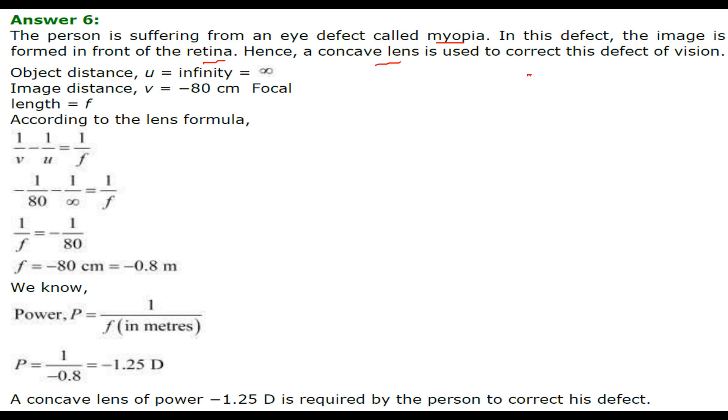The person suffering from myopia has the image formed in front of retina. So the concave lens is used to correct this defect. Light is coming from infinity, so we take u as infinity. v is given as minus 80 centimeter. We will put this in the lens formula. 1 by infinity is 0, so f will be minus 80 centimeter or minus 0.8 meter. Power is 1 by f, so this will be minus 1.25 diopter. We will use a concave lens of this power to correct the problem.